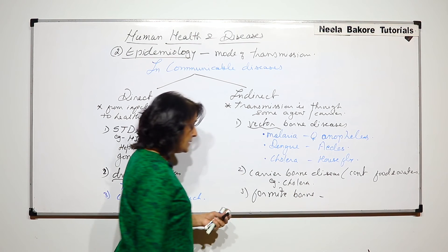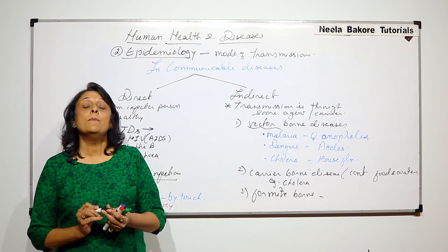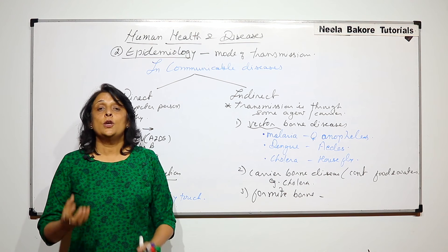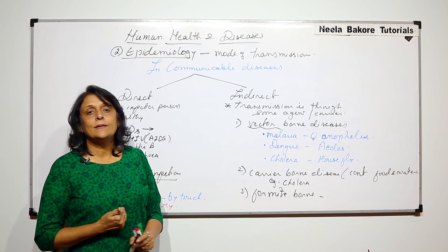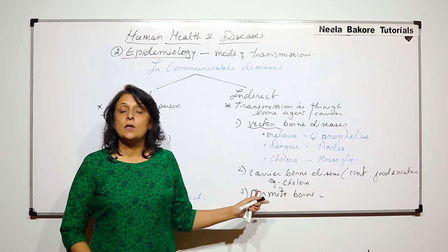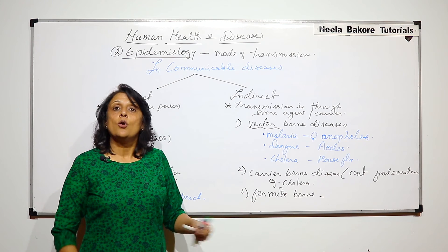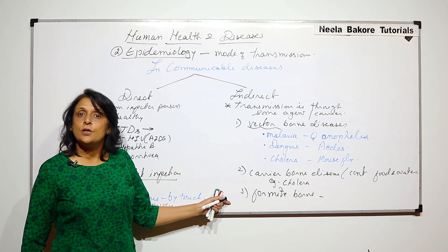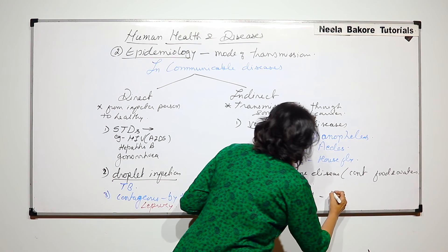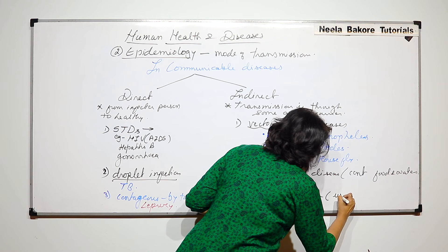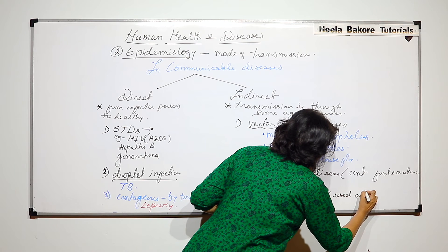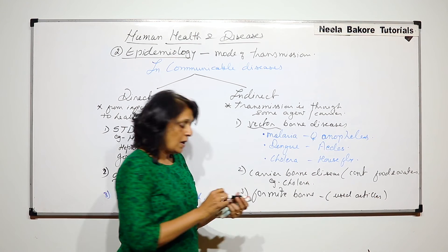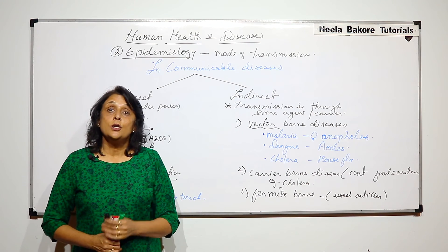This is by using some articles which are used by the infected person. The articles can be the utensils which the infected person is using, clothes, handkerchief, anything which the infected person is using. So it is through used articles like utensils and all.